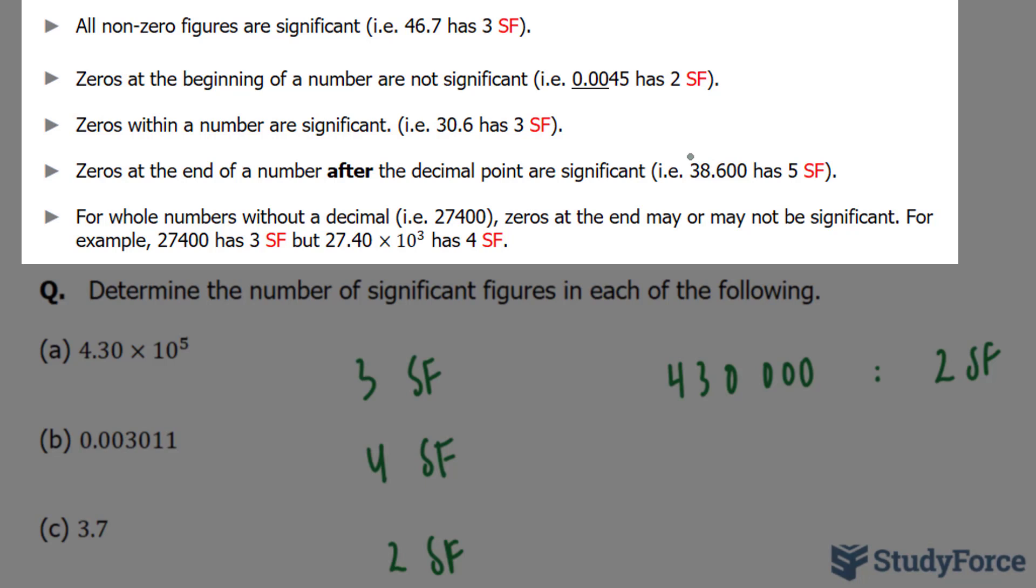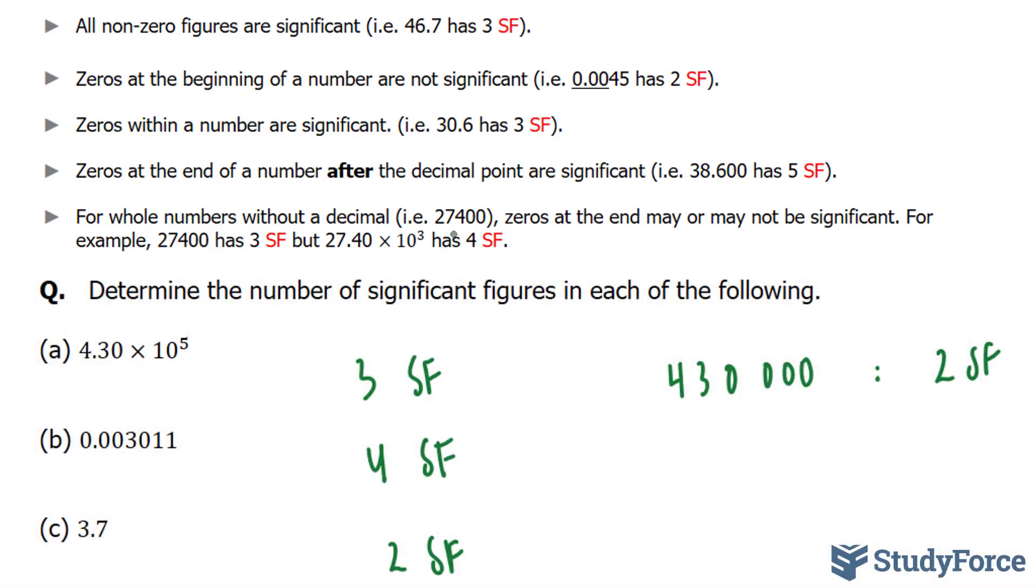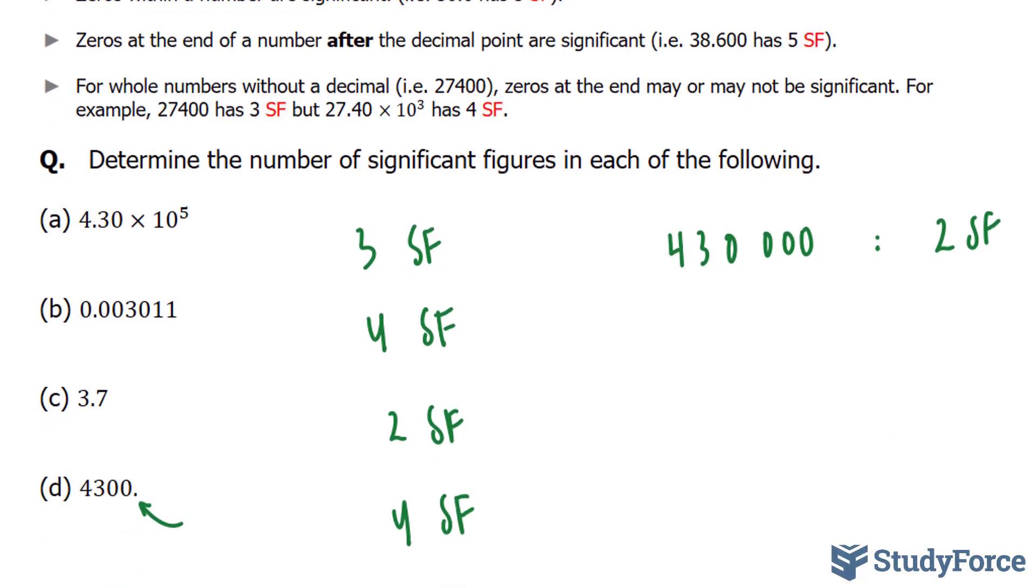And finally, for whole numbers without a decimal, for example, 27,400, zeros at the end may or may not be significant. This rule was demonstrated in our last example. For instance, 27,400 has 3 significant figures, but 27.40 times 10³ has 4 significant figures.